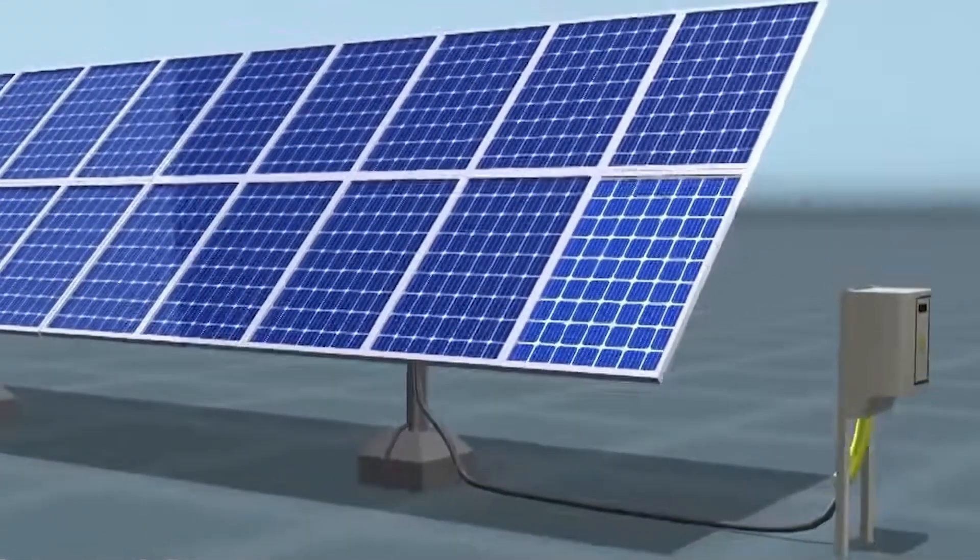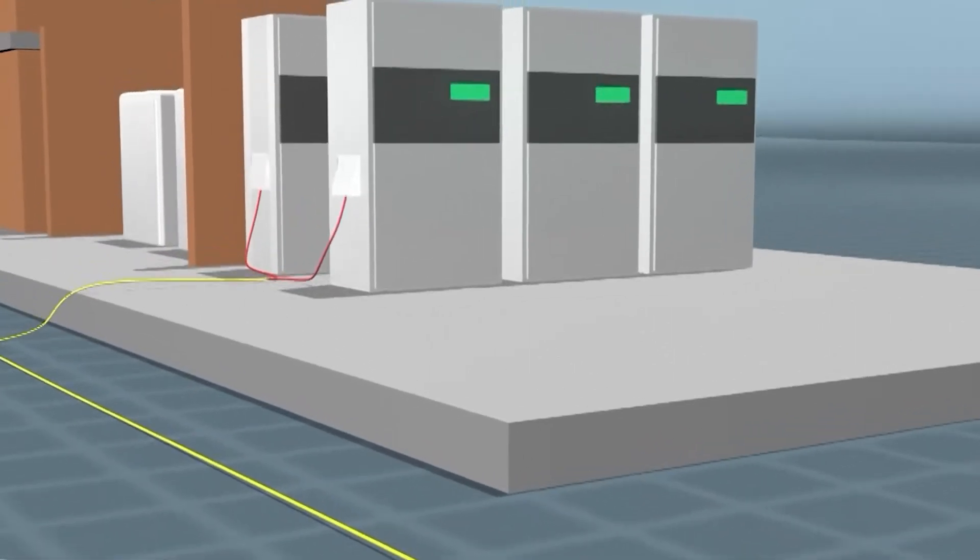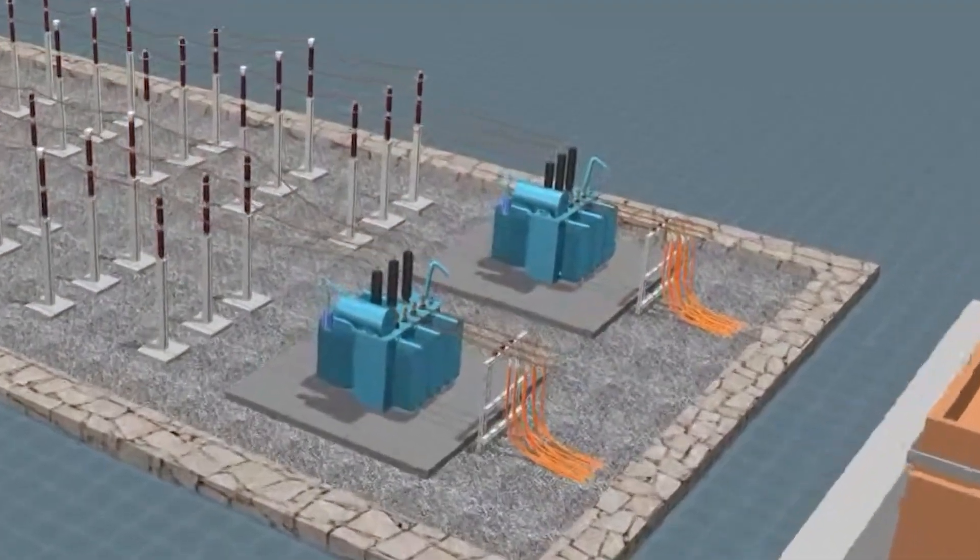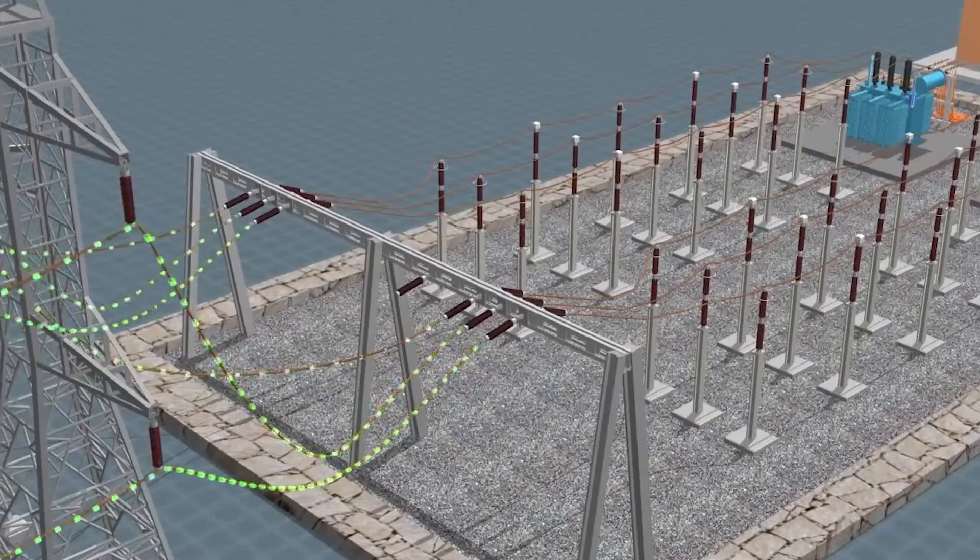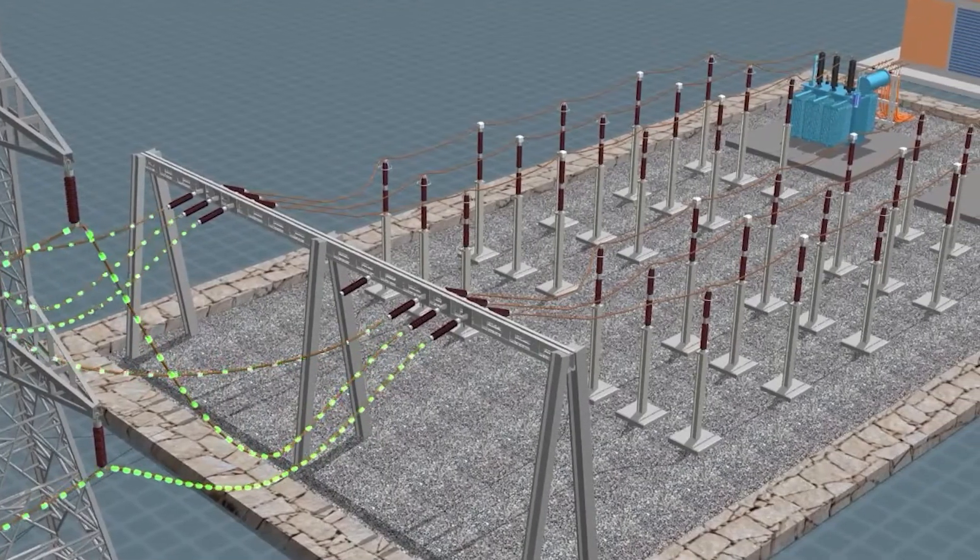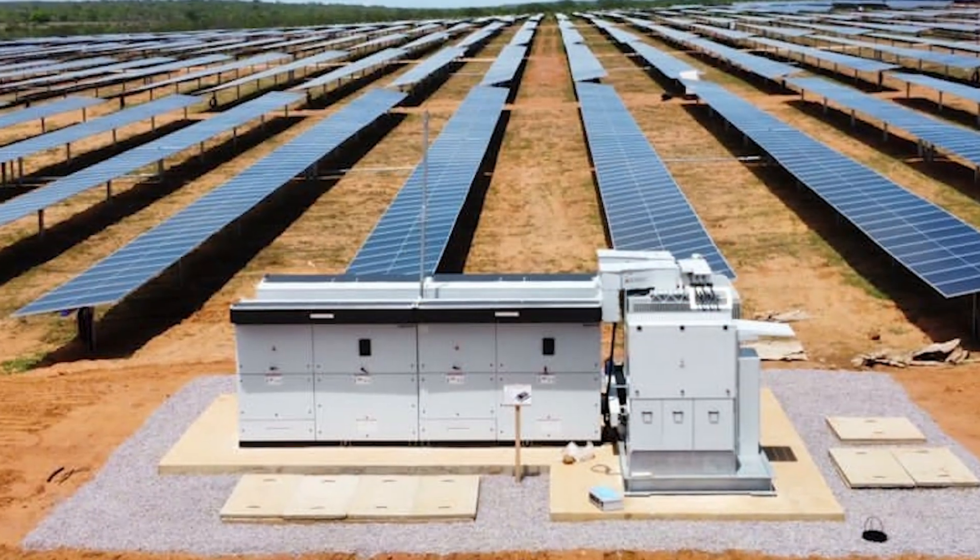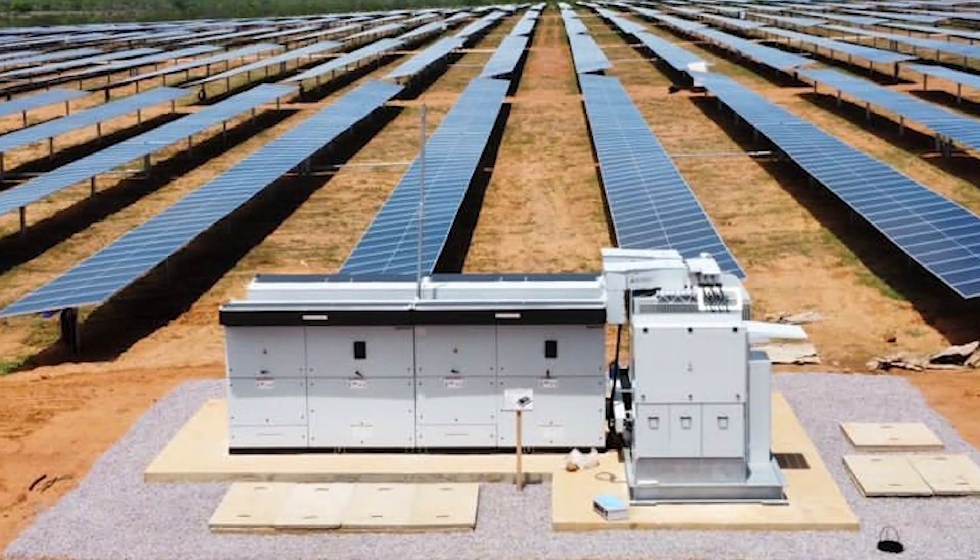Inverter-based systems, which include solar panels, wind turbines, and batteries, are the backbone of renewable energy integration. These systems work by converting DC power to AC power, but this conversion requires specialized equipment known as inverters.